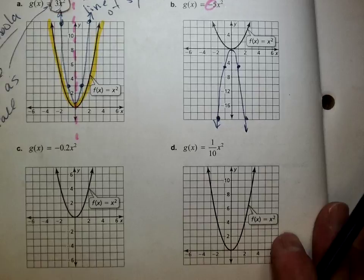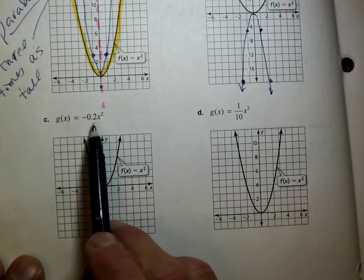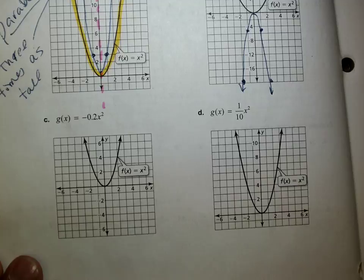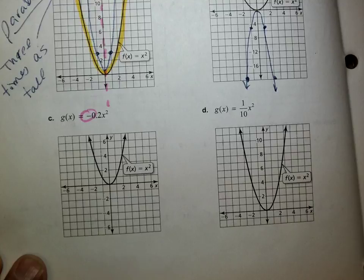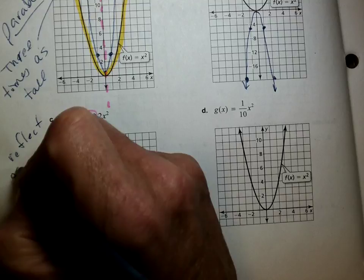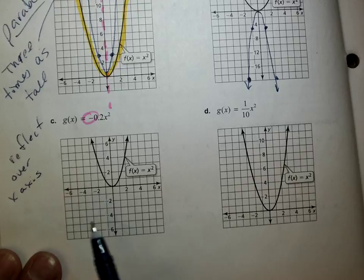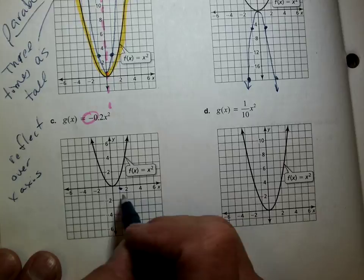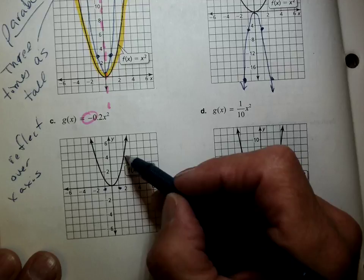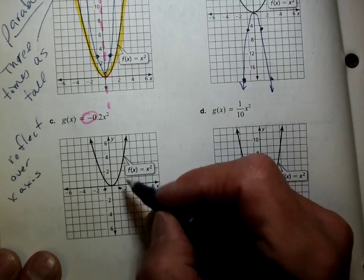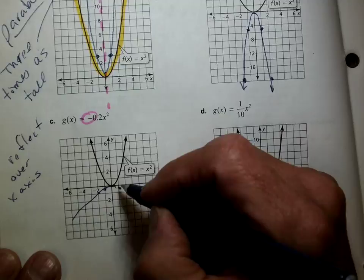Let's shift over to C. For C, it's going to be 0.2 as tall and upside down. So we're going to do two things: one, it's going to be a reflection over the x-axis. And it's going to be squished — a vertical squish, because it's going to get smaller. So instead of going to 1, we're going to go to 0.2. Instead of going up to 4, 4 times 0.2 is 0.8 — so I'm going to go to 0.8, which is hardly anything. So this one's super wide.